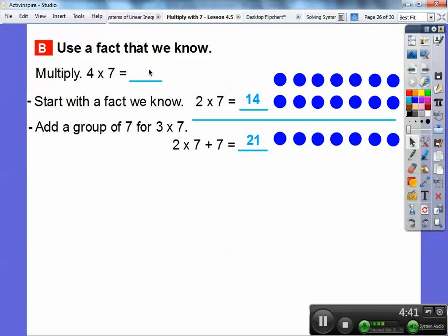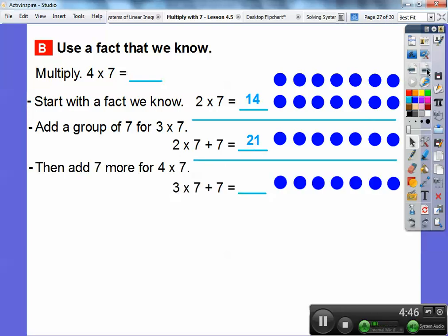Since we want to go to four times seven, and this is three times seven, which is twenty-one, just add another group of seven on there. Four times seven is the same as three times seven, which is twenty-one, plus seven more, which is twenty-eight. And, either way, we're going to get four times seven is twenty-eight. You can do this with five times seven or six times seven. You can do all these methods with all of that.